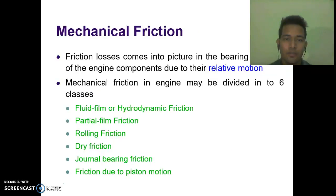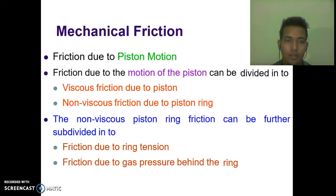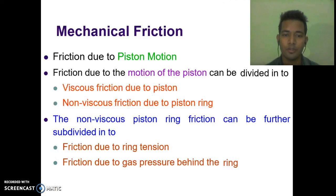Mechanical friction losses come into the picture at the bearing surfaces of engine components due to their relative motion. Mechanical friction in an engine may be divided into six classes: fluid film or hydrodynamic friction, partial film friction, rolling friction, dry friction, general bearing friction, and friction due to piston motion. Friction due to piston motion can be divided into viscous friction due to the piston and non-viscous friction due to piston rings. The non-viscous piston ring friction can be further subdivided into friction due to ring tension and friction due to gas pressure behind the ring.